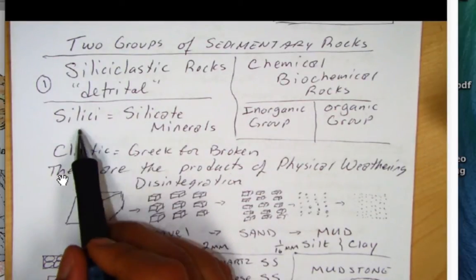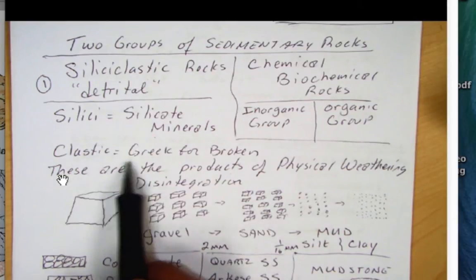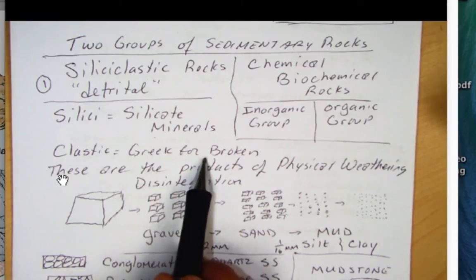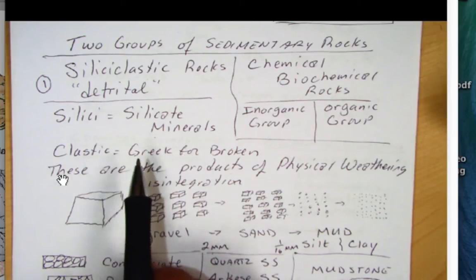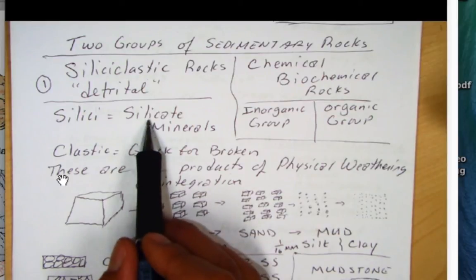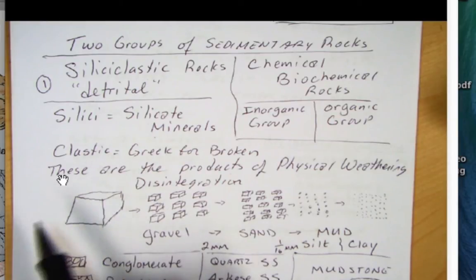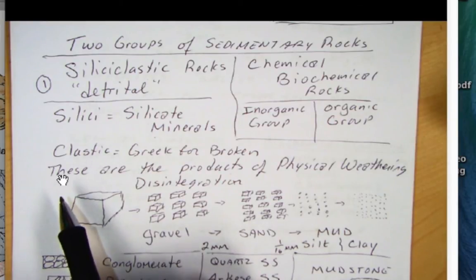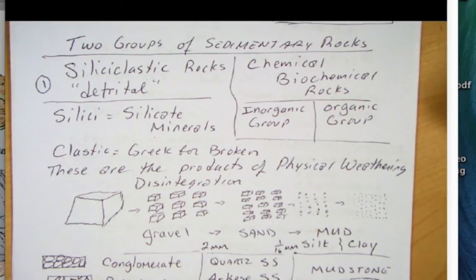Silici stands for silicate minerals and the clastic part here stands for, well it's Greek for broken. And so these rocks are composed of broken minerals, broken rock forming minerals. Remember the rock forming minerals are the silicates. And so little feldspars, quartz, micas, hornblendes, all those minerals involved in forming igneous rocks primarily.